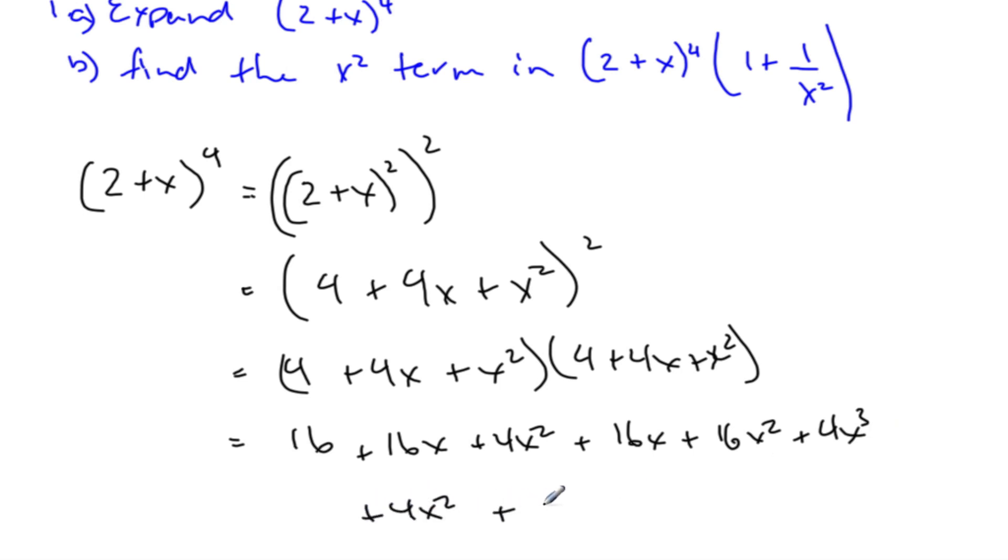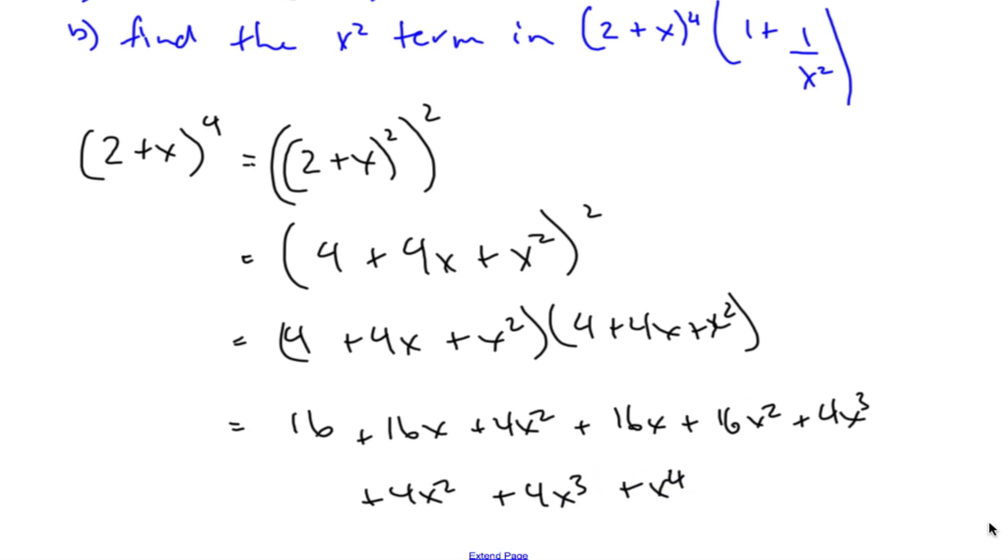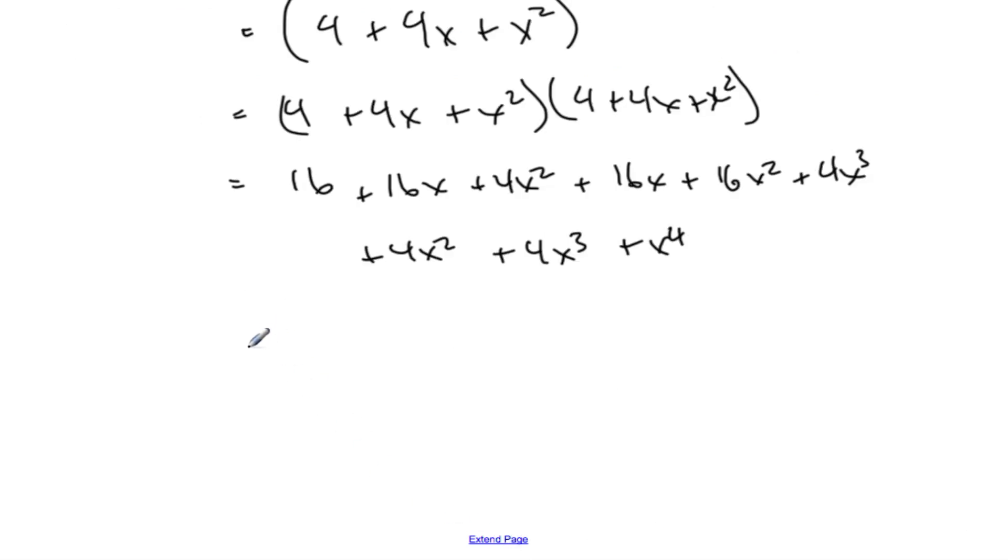And when I collect like terms here, I get 16x and 16x, which gives 32x. And x^2, x^2, x^2 gives me 24x^2.